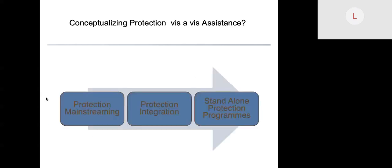Now we'll talk about conceptualizing protection vis-à-vis assistance. The interagency policy on protection describes protection in a continuum, starting with protection mainstreaming on the left, to protection integration, and then standalone protection programs. In the guide for cash, for protection and cash-based interventions, this continuum is applied specifically to CBIs.